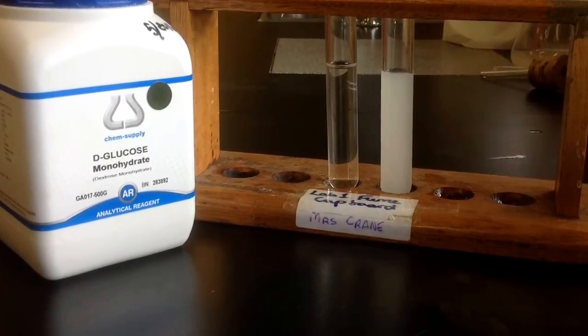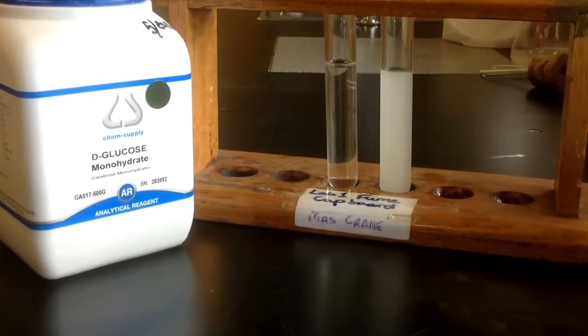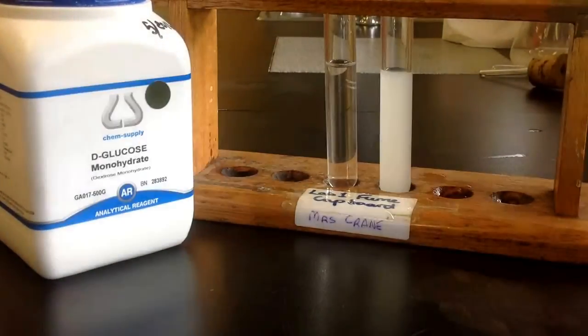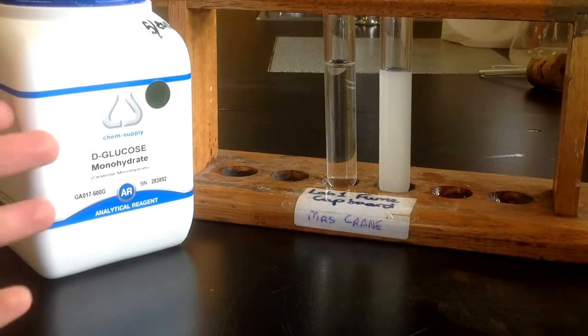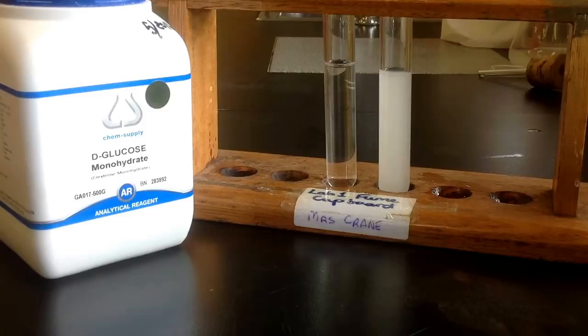Okay, so I thought I might do this practical again. This is the test for reducing sugars, which glucose is one. You can see glucose here. This is the powder I used, and that's what I used to do the fermentation.